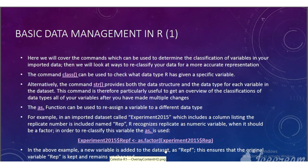Here we will cover the commands which can be used to determine the classification of variables in your imported data. Then we will look at ways to reclassify your data for a more accurate representation. The command class with double brackets can be used to check what data type R has given a specific variable. Alternatively, the command str with double brackets provides both the data structure and the data type of each variable in the data set.